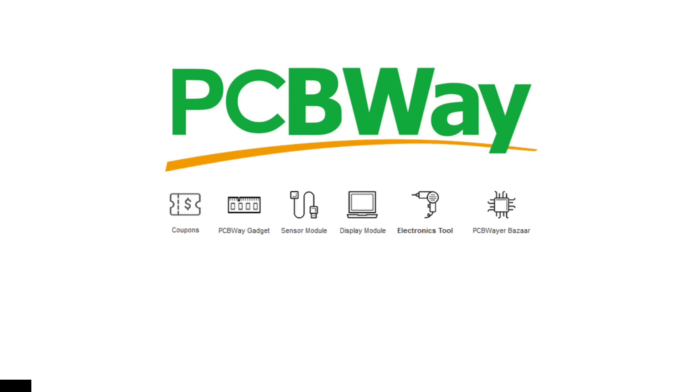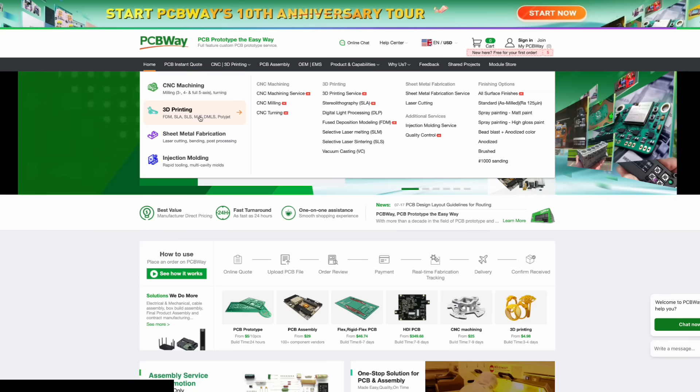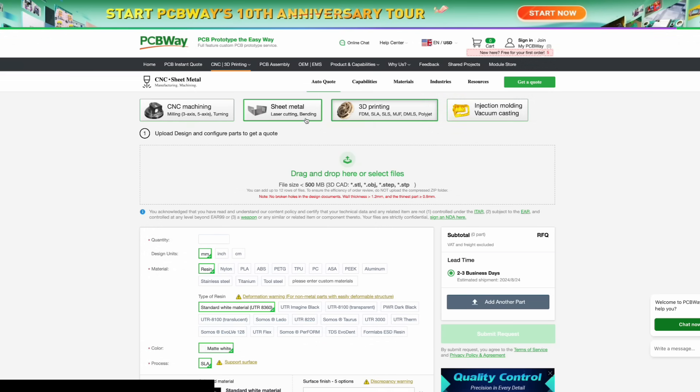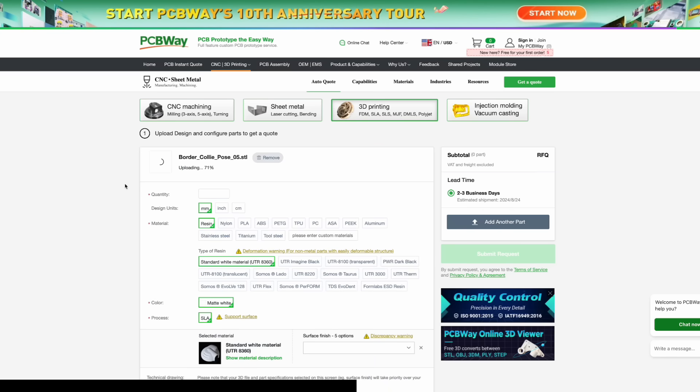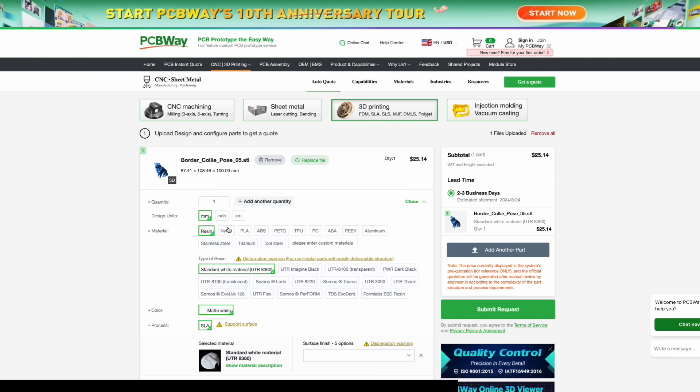PCBWay is not only known for creating their custom PCBs they are also very well known for their CNC and 3D printing services. If you have a 3D printer that either cannot print certain materials or doesn't have a large enough build volume you can head over to PCBWay upload your file and you can pick from all sorts of different materials such as resin, nylon, PLA, ABS, pick your quantity, the size of your STL, you can see your subtotal here as well as how long it will take to get your item you can submit your request. I just think this is an amazing service and I'm very honored to be sponsored by PCBWay in today's video.